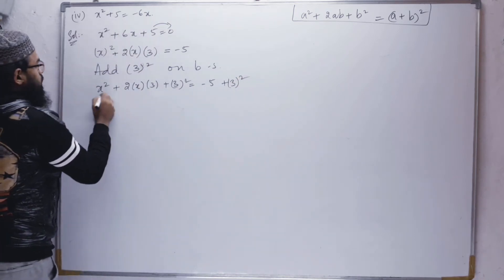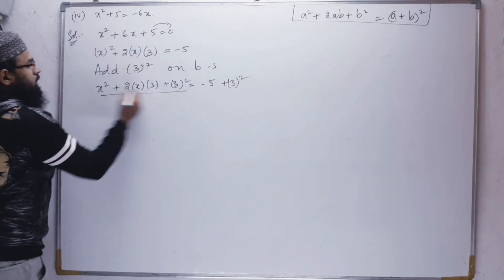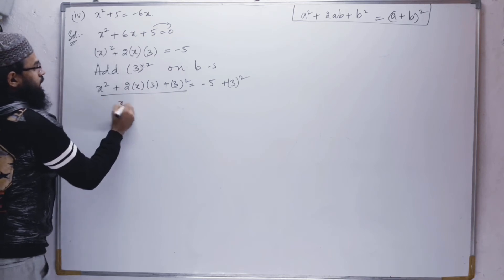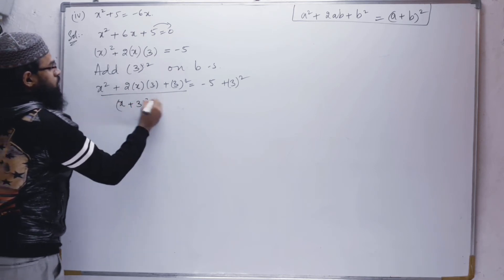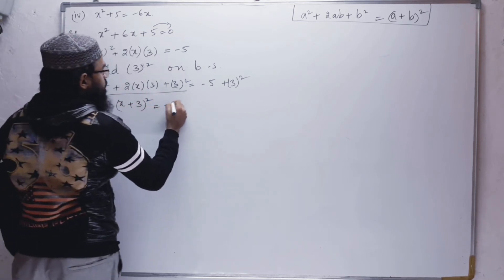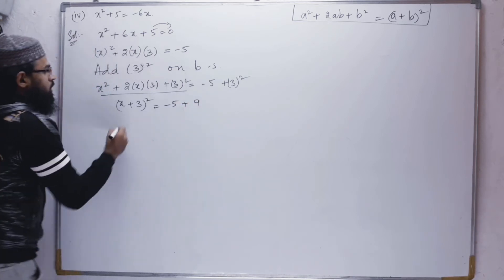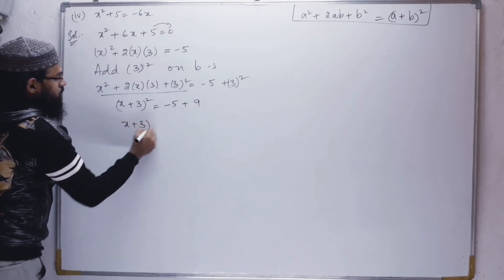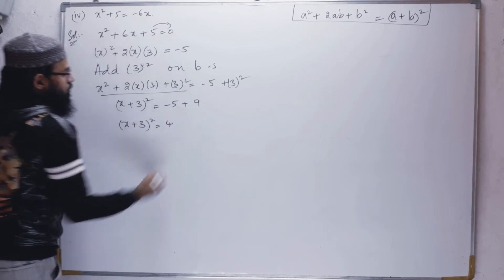So now this is in the formula form. a is x and b is 3. So (x + 3)² = 9 - 5 = 4.